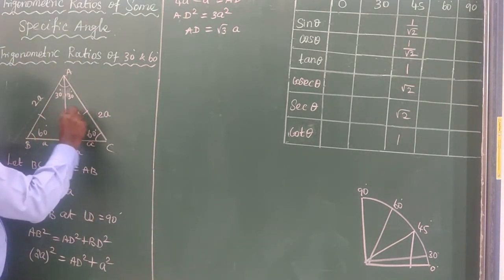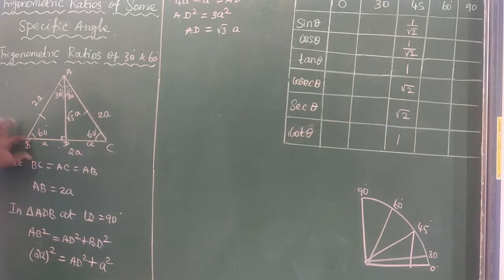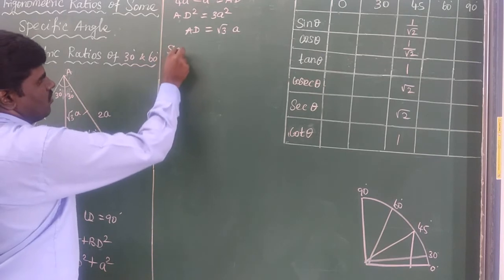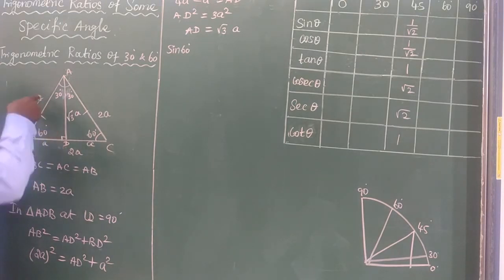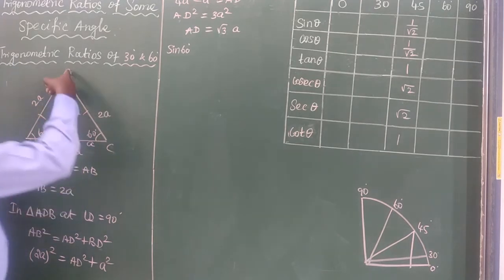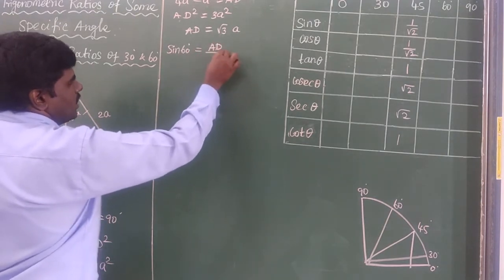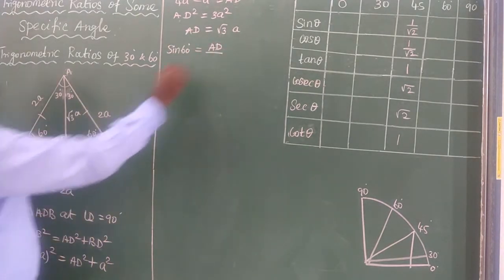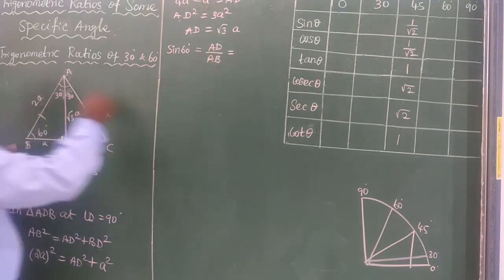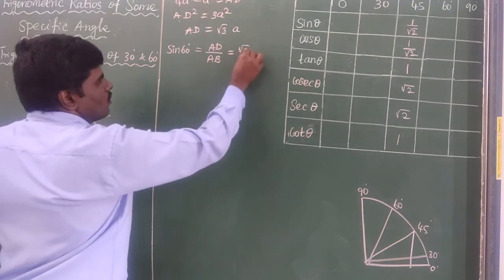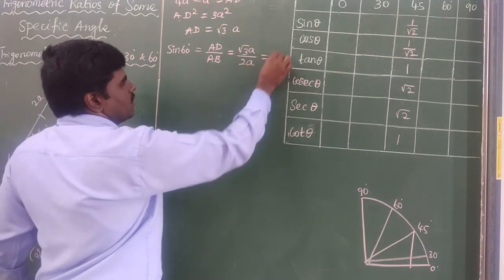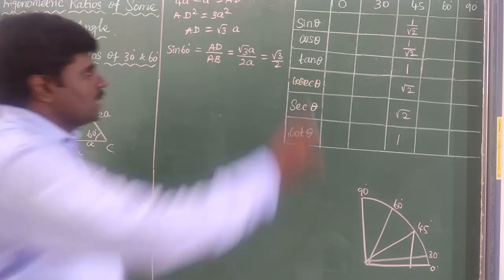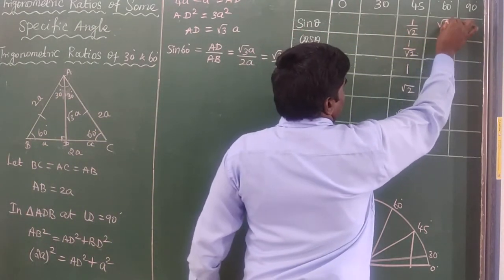First I find out sin 60°. The formula for sine is opposite side divided by hypotenuse. So sin 60° = AD / AB. The opposite side AD = √3·A, and the hypotenuse AB = 2A. Cancelling A, we get sin 60° = √3/2.